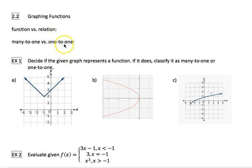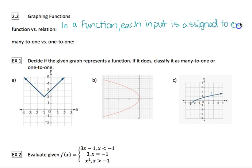So function versus relation, when we're talking about graphs, the actual definition is that in a function, each input is assigned to exactly one output. Now, while we have that, the easiest way when we're looking at a graph is to look at the vertical line test. So a function must pass the vertical line test.